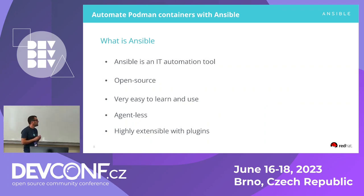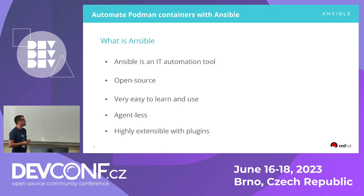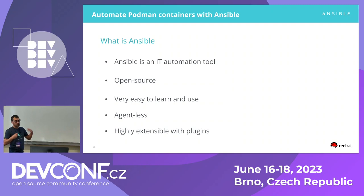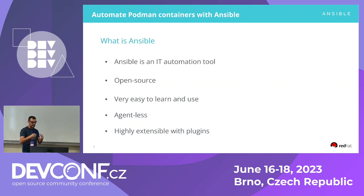Now a quick introduction to Ansible — it's an IT automation tool that allows you to automate things for your infrastructure, whether that's deploying servers, configuring servers, deploying applications, and so on. It's open source with Red Hat. It has a very low learning curve and is easy to get going. It's agentless — some other tools require installing agents on your servers, but with Ansible you run it from a bastion or control machine and run automation against your target hosts. As long as you can SSH to a host or use a connection plugin, you can automate it.